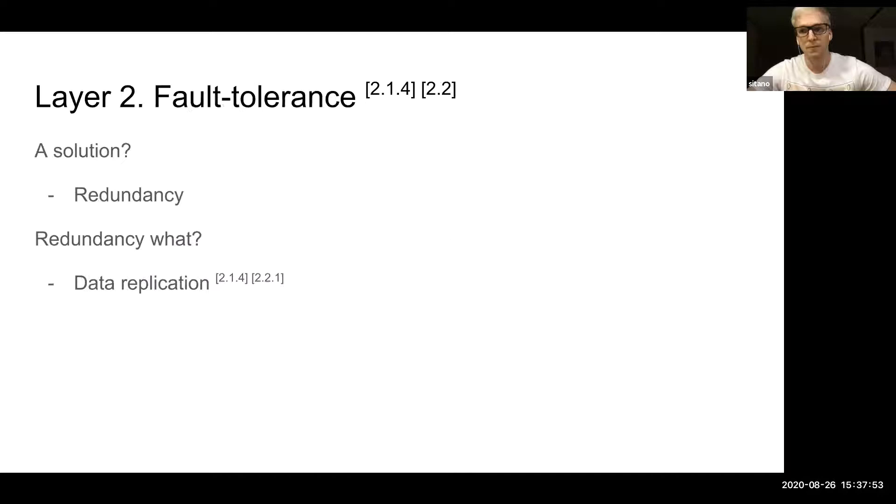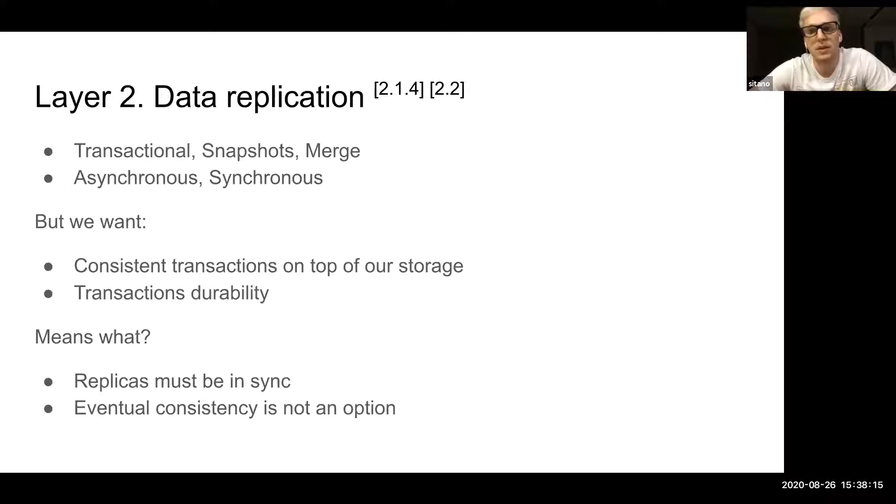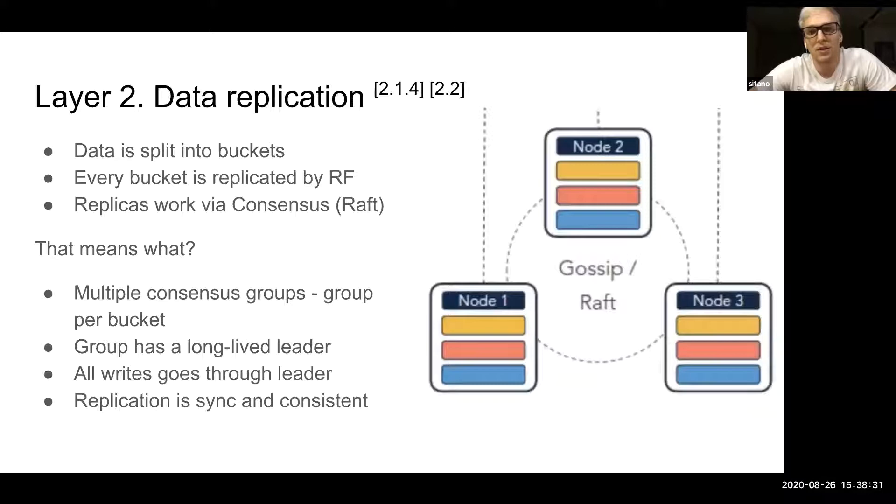On top of local data storage, fault tolerance can be built, and fault tolerance can be provided with redundancy, meaning data replication. But CockroachDB also wants to guarantee strongly consistent transactions on top of its key-value storage, so eventual consistency is not an option and the replicas must be synchronized. It splits data into buckets and replicates those buckets. Those buckets form the replica set group which is kept synchronized with the consensus algorithm. Specifically, CockroachDB uses Raft to solve the consensus for the replica set, meaning that the group has a long-lived leader which processes the writes and reads.